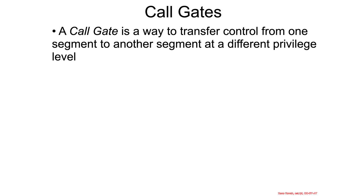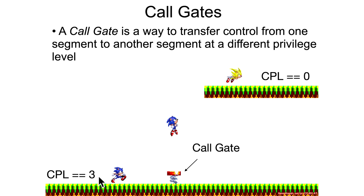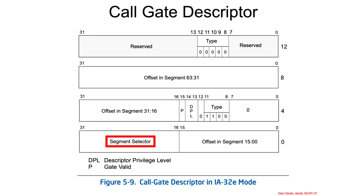Call gates are one of the ways that you can do that. You can think of a call gate like Sonic running along at his normal privilege level, CPL3. He hits a call gate, and boing, he's up to CPL0. But it's obviously more complicated than that, so how does it work?